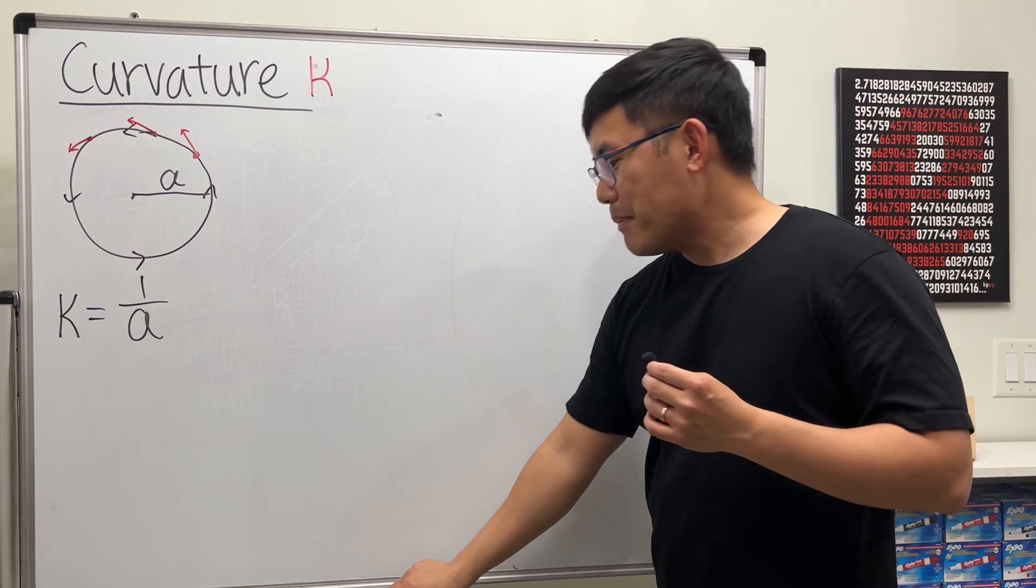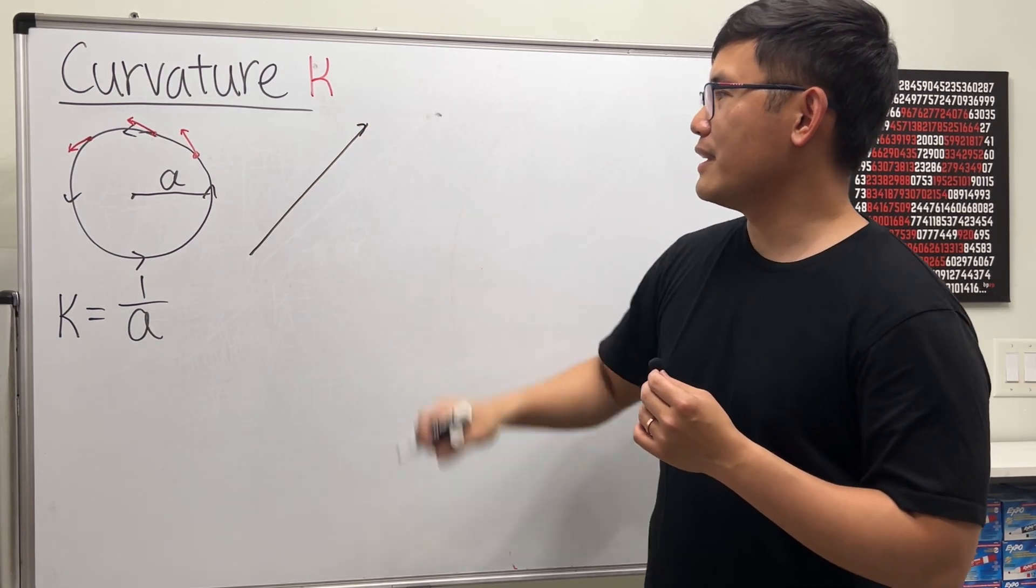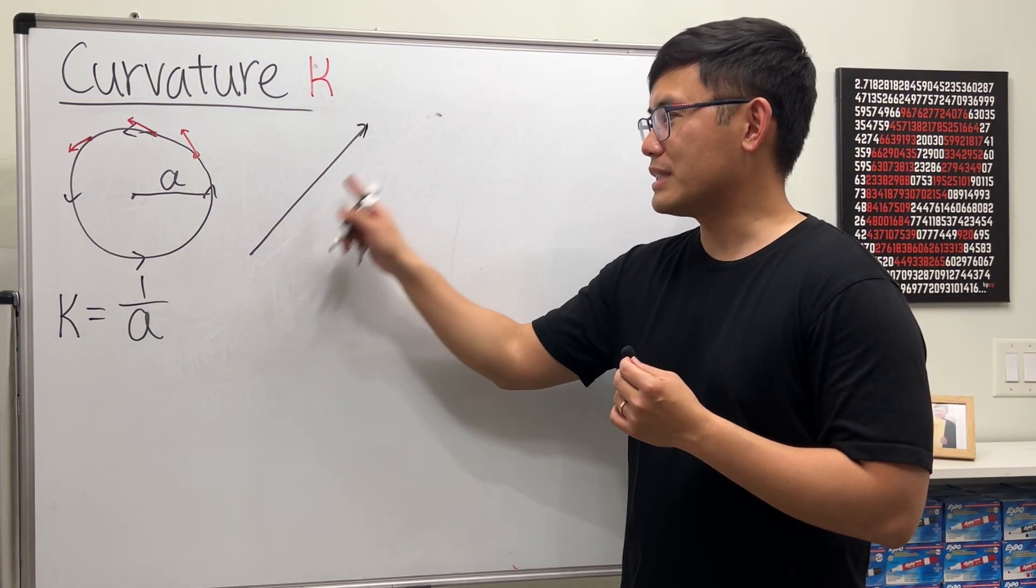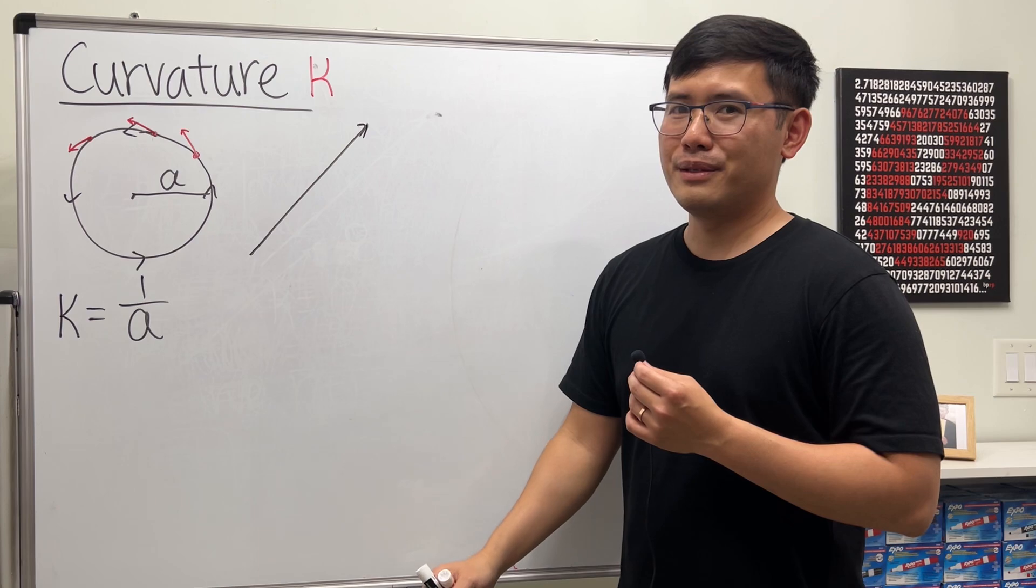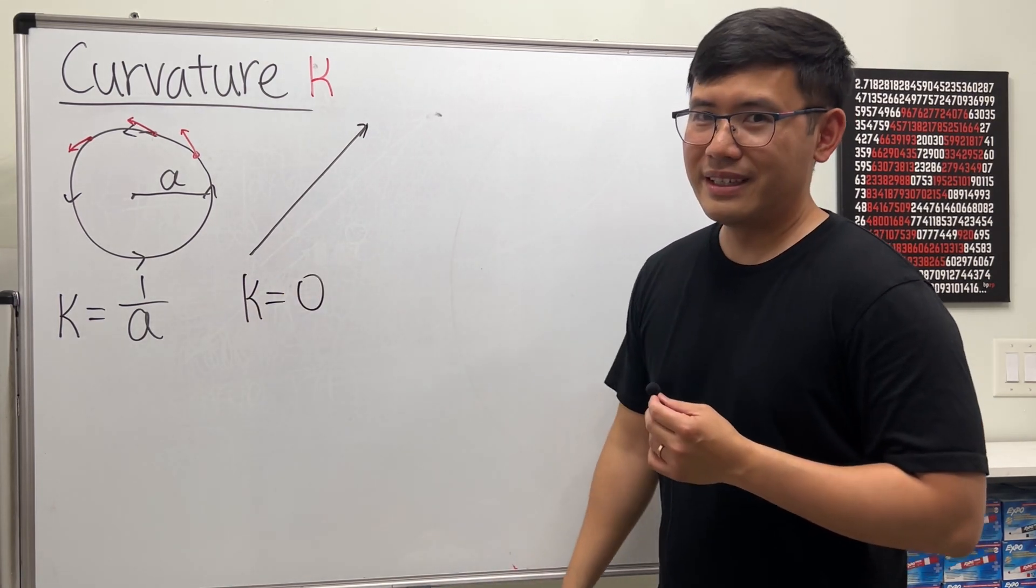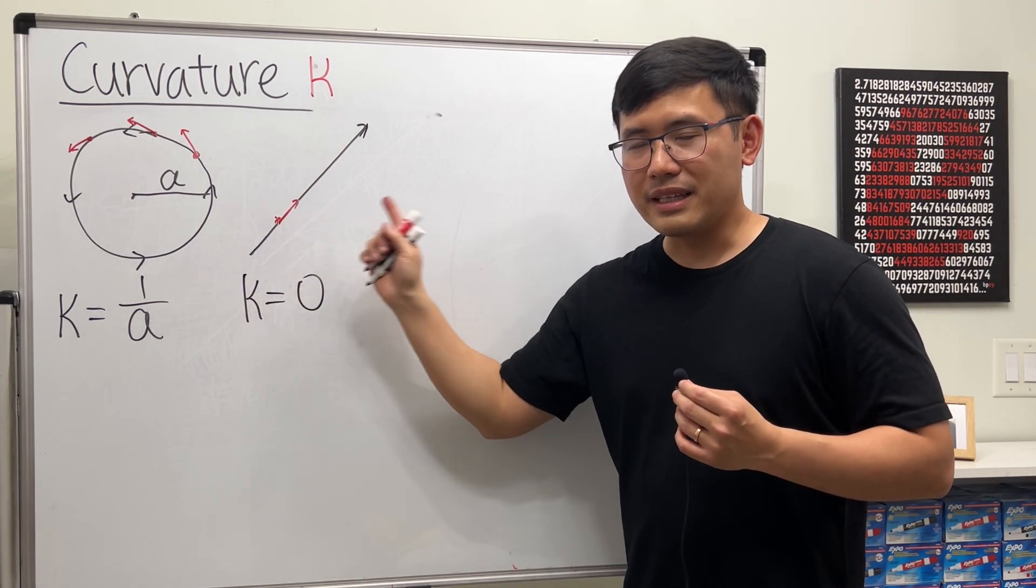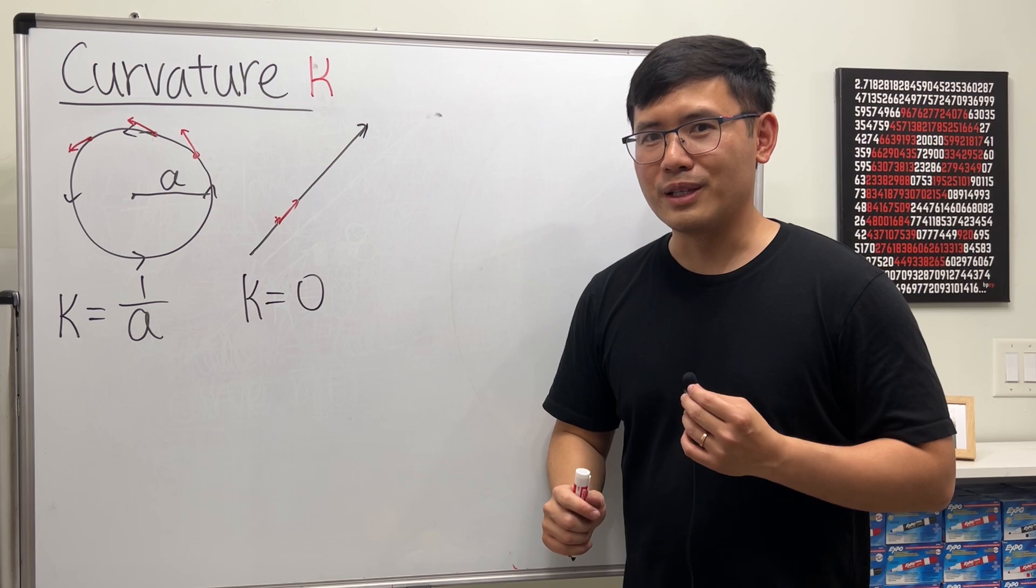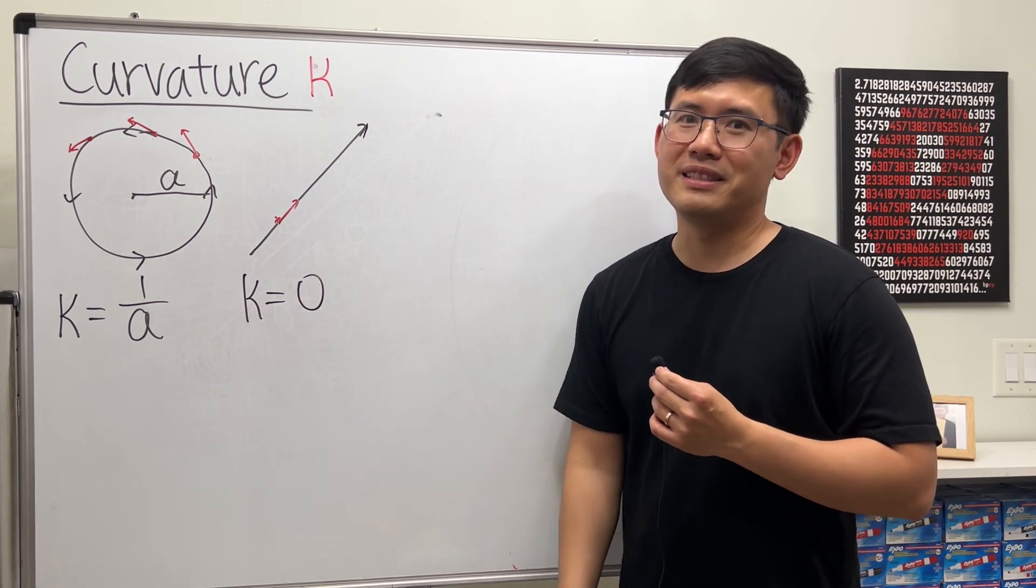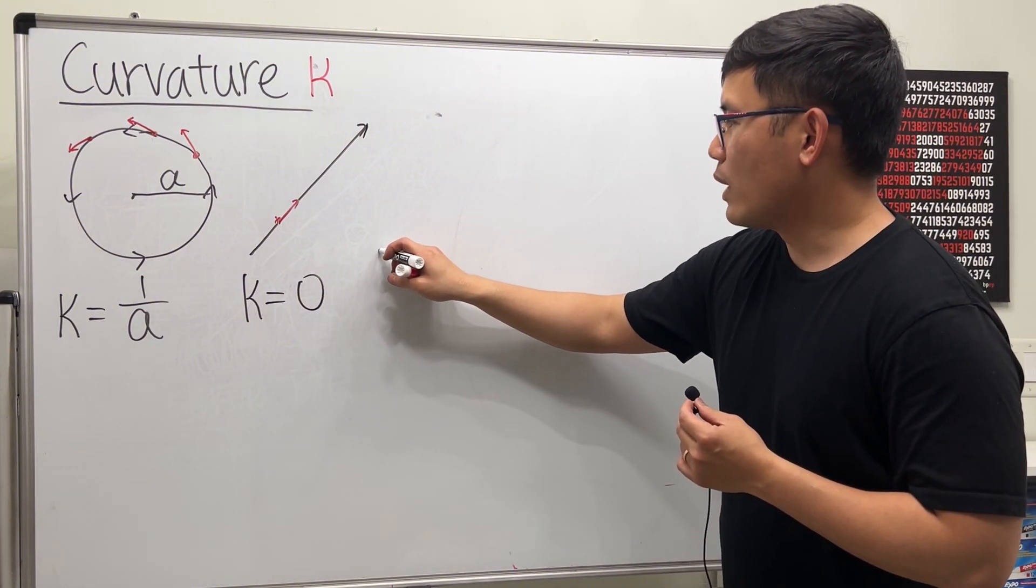Now that being said, what's the curvature of a line? You don't really have to do any computation here because you just have to ask yourself: does this bend? No. The curvature right here is equal to zero. It does not bend. It's just a line. This line has slope, but that's Calculus 1. The slope is the first derivative. Curvature is how much it bends.